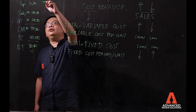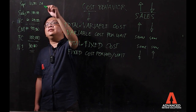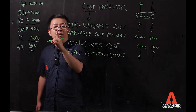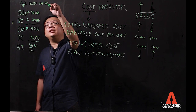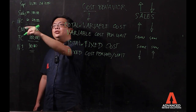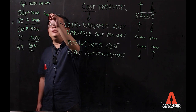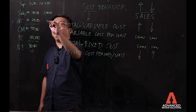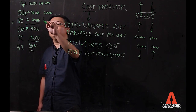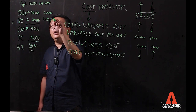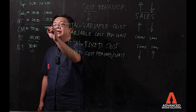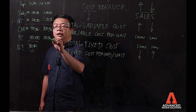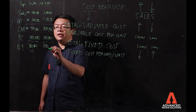How about in October? Sales doubled from 10,000 to 20,000 units. Sales = 20,000 × 100 = 2,000,000; variable cost = 20,000 × 60 = 1,200,000; CM = 800,000. Fixed cost remains the same at 100,000. Net income = 700,000.